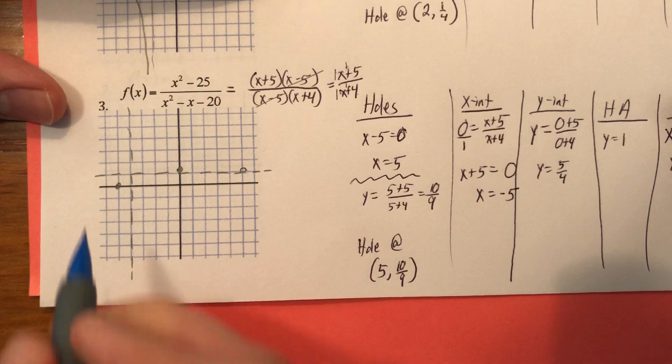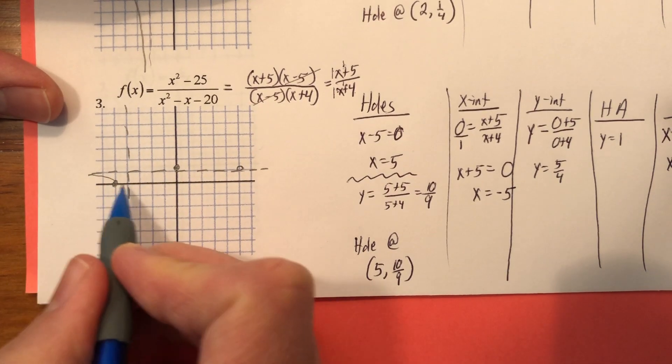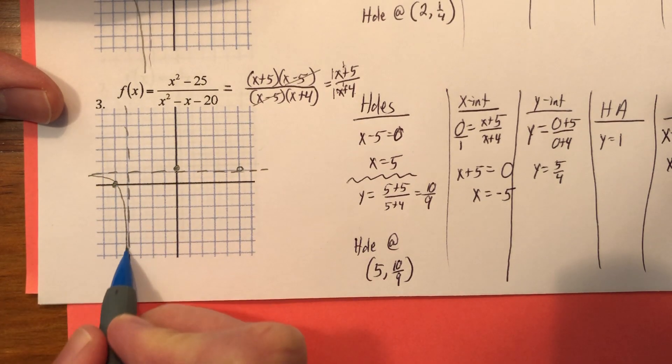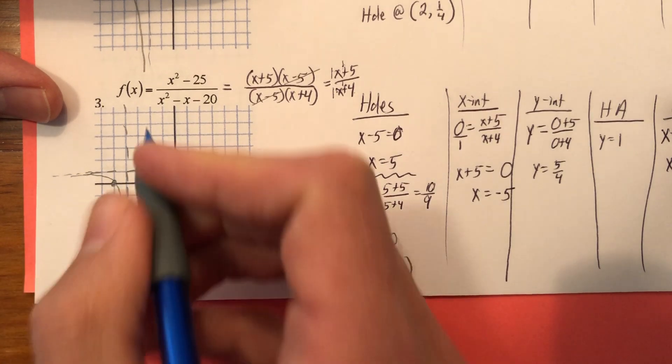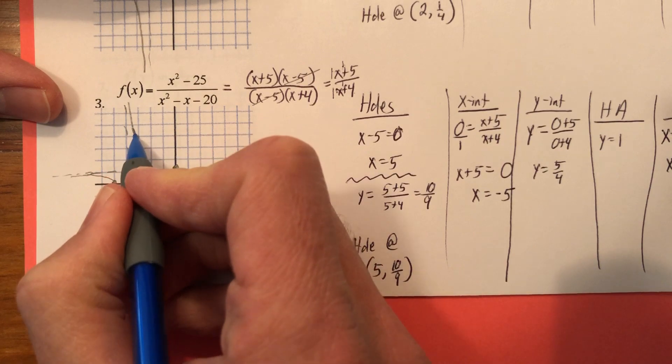So let's just draw it. Okay. It doesn't have to be perfect. It just needs to look pretty close. Oh, no. Looks like I touched the asymptote there. Unintentional. Didn't mean to do that. Asymptotes don't cross functions. My pencil lead broke.